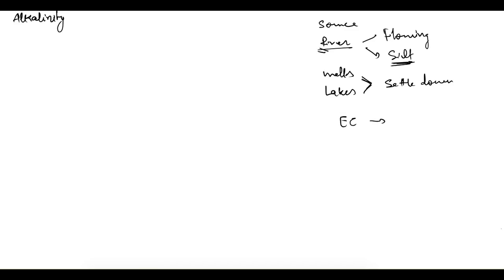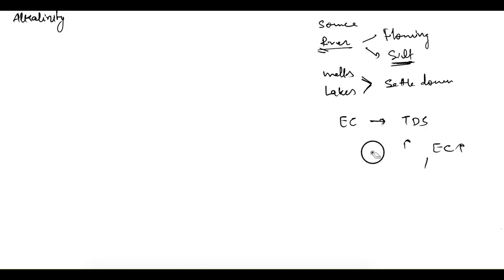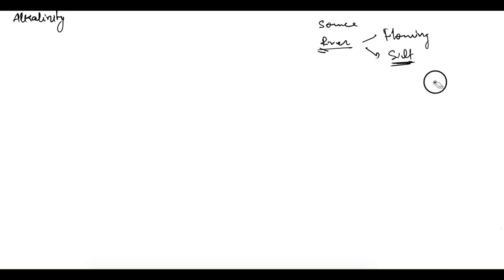Another question was the relationship between electrical conductivity and total dissolved solids. Obviously, as total dissolved solids increases, electrical conductivity also increases, because the ions present in water increase with the increase in total dissolved solids. So those were the two questions. Now let's move to the next chemical parameter, which is alkalinity.